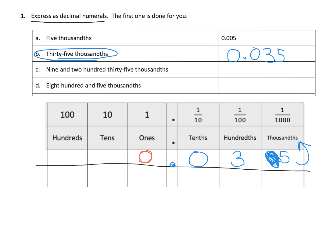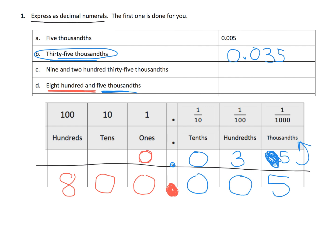Let's do D: 800 and five thousandths. So the first part — 800 — means you have eight in the hundreds place. The word 'and' is interpreted as the decimal point. So 800 and... Now this next part says five thousandths, which simply means we're going to put a five in the thousandths column and fill in the missing zeros. So our answer is 800.005.